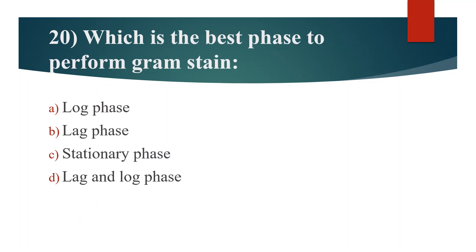Twentieth question. Which is the best phase to perform Gram staining? Option A: Log phase. Option B: Lag phase. Option C: Stationary phase. Option D: Lag and log phase. Answer is Option A: Log phase.